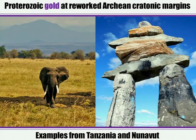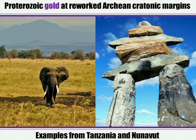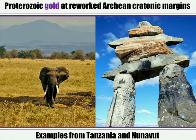My name is Chris Lawley, and today I'm going to talk about a relatively unusual setting for gold mineralization. There are only a few case examples of this setting worldwide, and what I'm going to be talking about is reworked Archean cratonic margins. When I talk about Archean cratons, a lot of people think that these are stable continental blocks — and that is the definition. But I'm going to argue that at the margins of those Archean cratons, you can actually rework them during younger orogenic events, and that gold is related to that reworking.